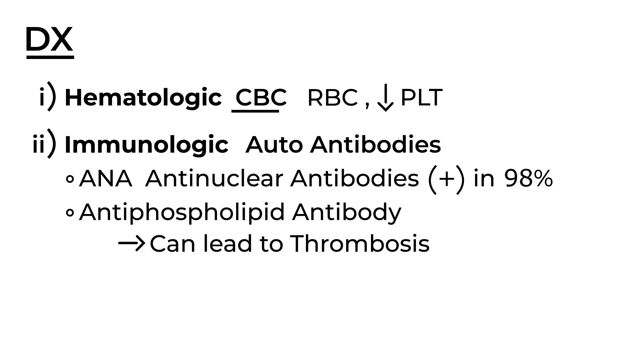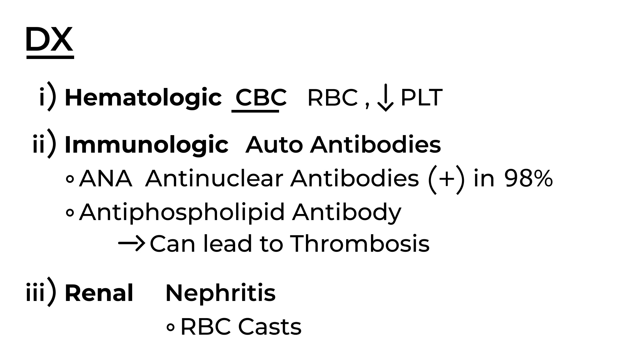The third category of tests involves renal tests. Nephritis can occur in lupus patients, so the relevant tests include RBC casts, which are very characteristic of nephritis, and a urinalysis, which will also be helpful.